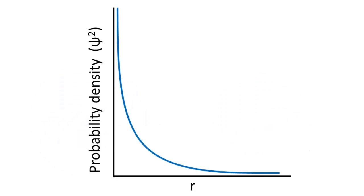If we take a look at a plot of the probability density versus the distance from the nucleus, which we'll call R, we can see that the further away you go from the nucleus, the less likely you are to find the electron. It seems logical, but it tends to imply that the most likely place to find the electron is at the nucleus, and that's not true at all.